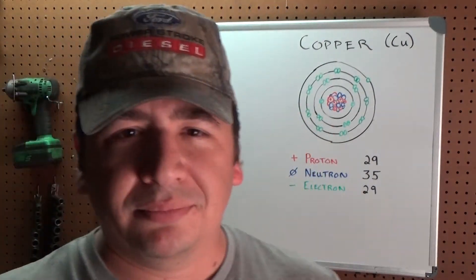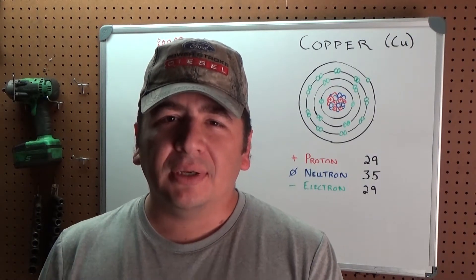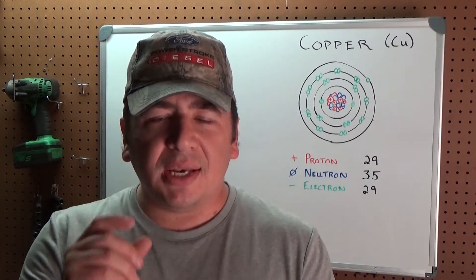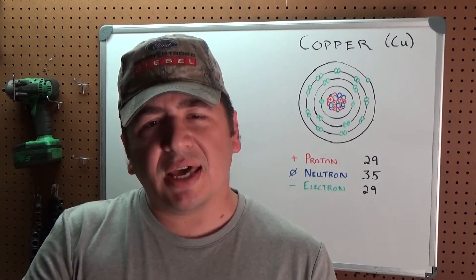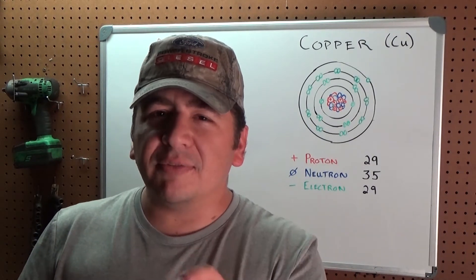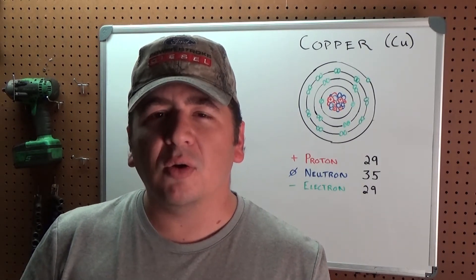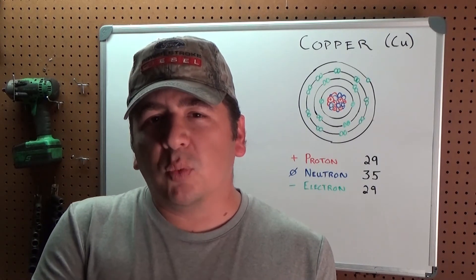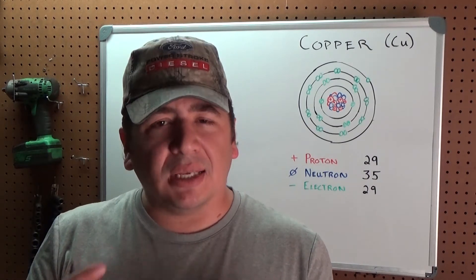We're going to start at the very basics of electricity, and to do that we're talking about atoms. So what is electricity? Electricity is when an electron from one atom jumps to another atom. The energy that's released when that electron leaves an atom and moves to another one is electrical energy. Remember that when that electron leaves one atom and moves to another one, the energy released is electrical energy.